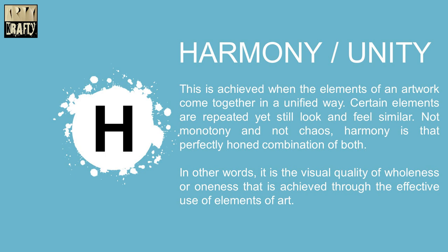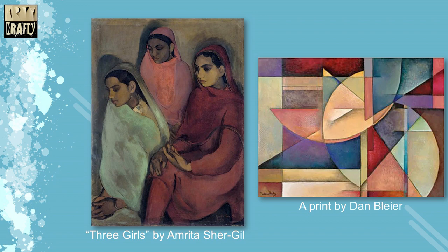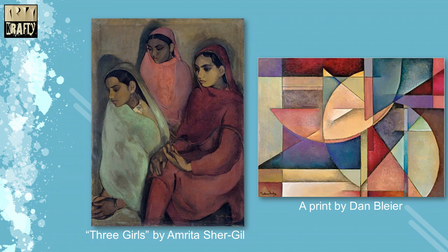Then comes harmony or unity. This is achieved when the elements of an artwork come together in a unified way. Certain elements are repeated, yet still look and feel similar — not monotony and not chaos. Harmony is that perfectly balanced combination of both. It is the visual quality of wholeness or oneness achieved through the effective use of elements of art. The first example is Three Girls by Amrita Shergill, and the second is a print by Dan Blair.